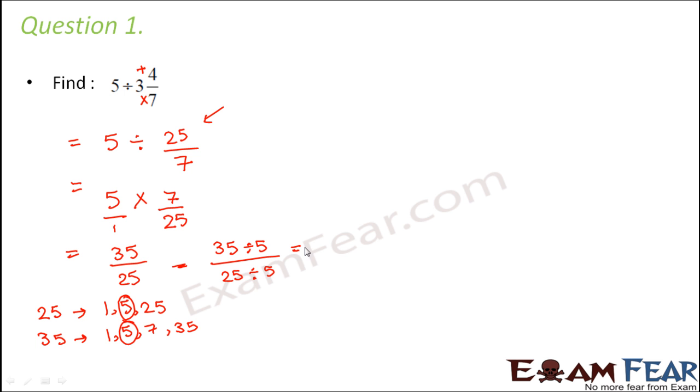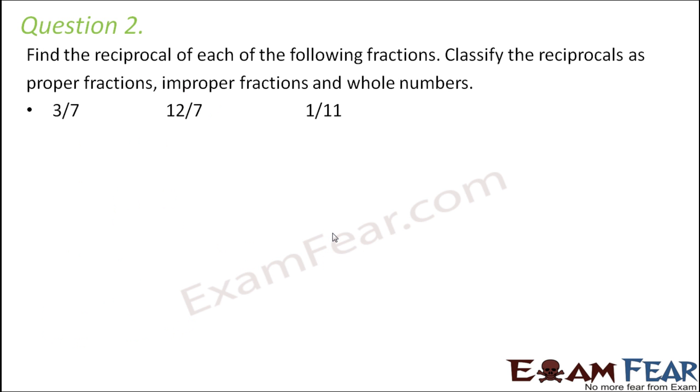35 divided by 5 is 7, and 25 divided by 5 is 5. So the answer would be 7/5.